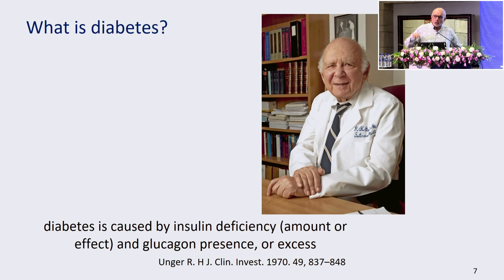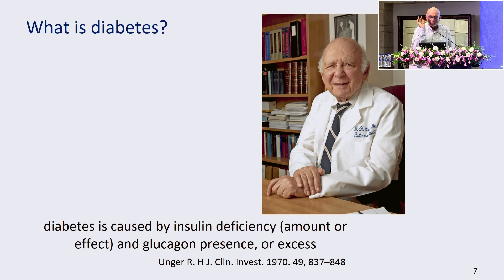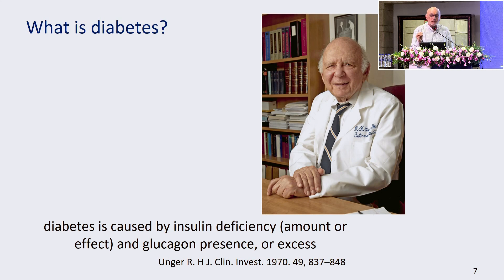We've all talked about diabetes, but here is Roger Unger's definition of diabetes — not today, but from 1970. It's a classic from a man who breathed and lived one aspect of science, an amazing human being. Diabetes is caused by insulin deficiency, in amount or effect, and glucagon presence or excess. And 50 years after he said that, we know this is true.